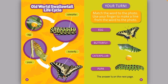Your turn. Match the word to the photo. Use your finger to make a line from the word to the photo. The first one is egg. The second word is butterfly. The next word is caterpillar. And the last one is pupa.